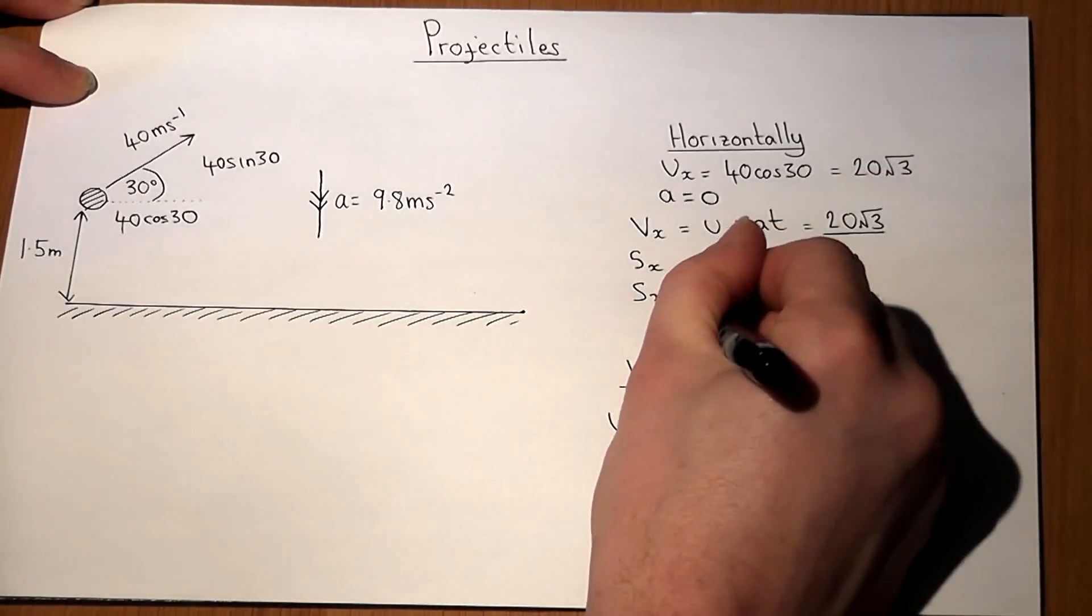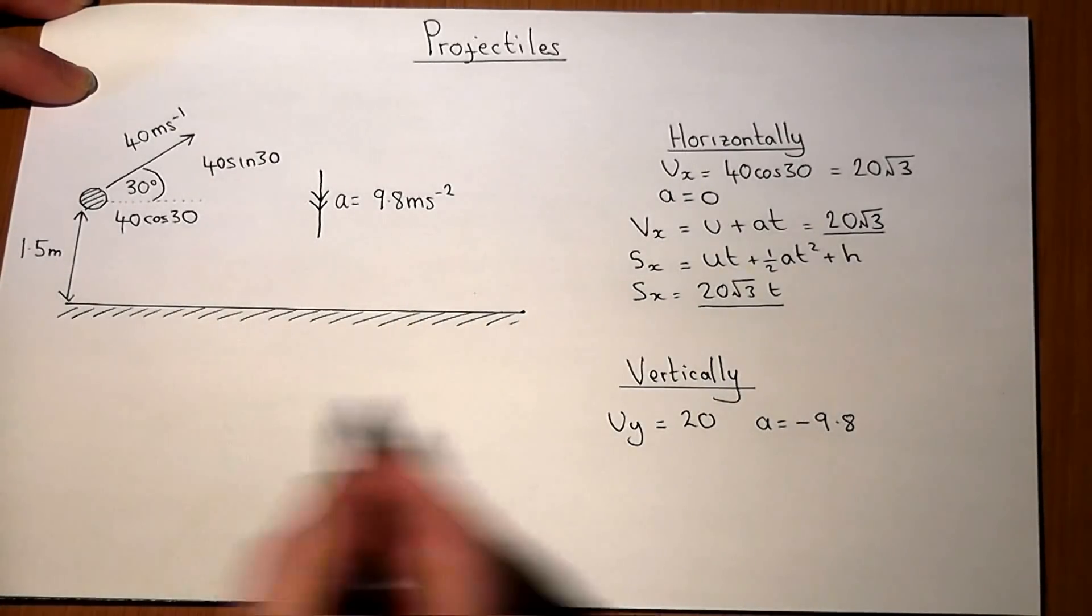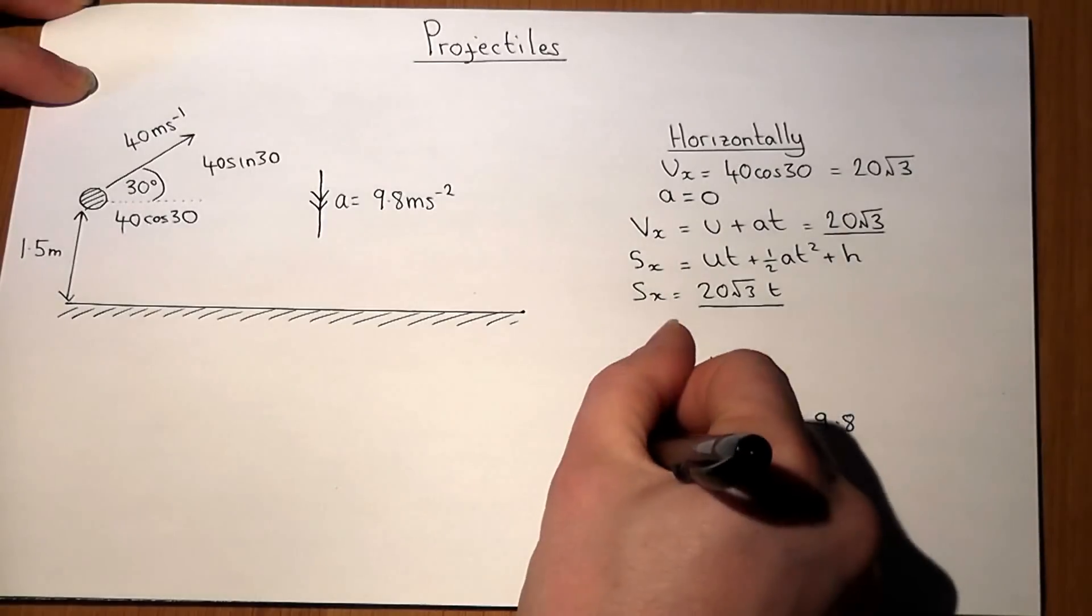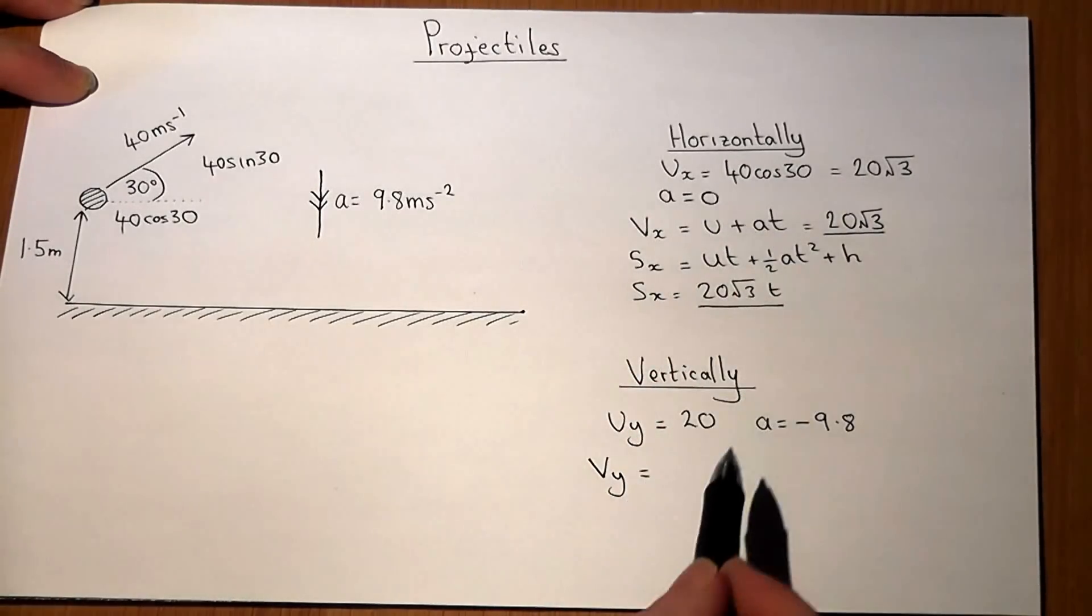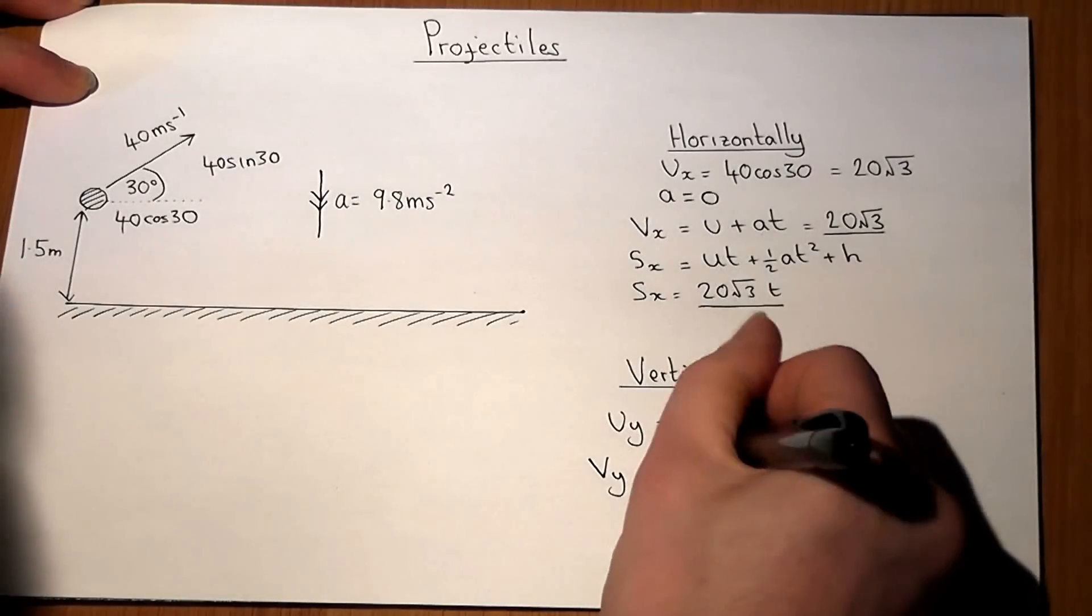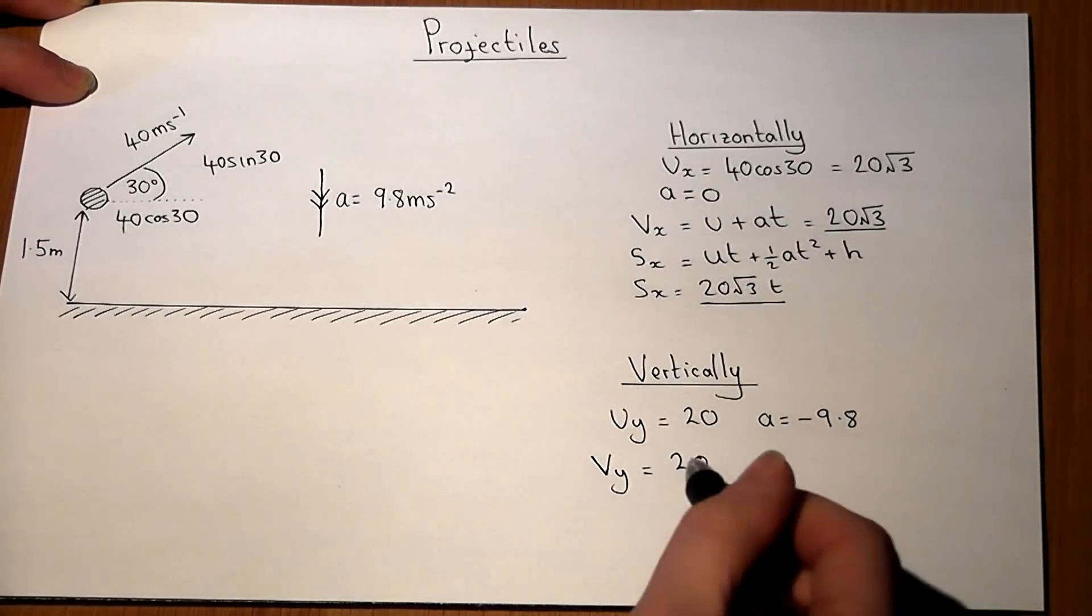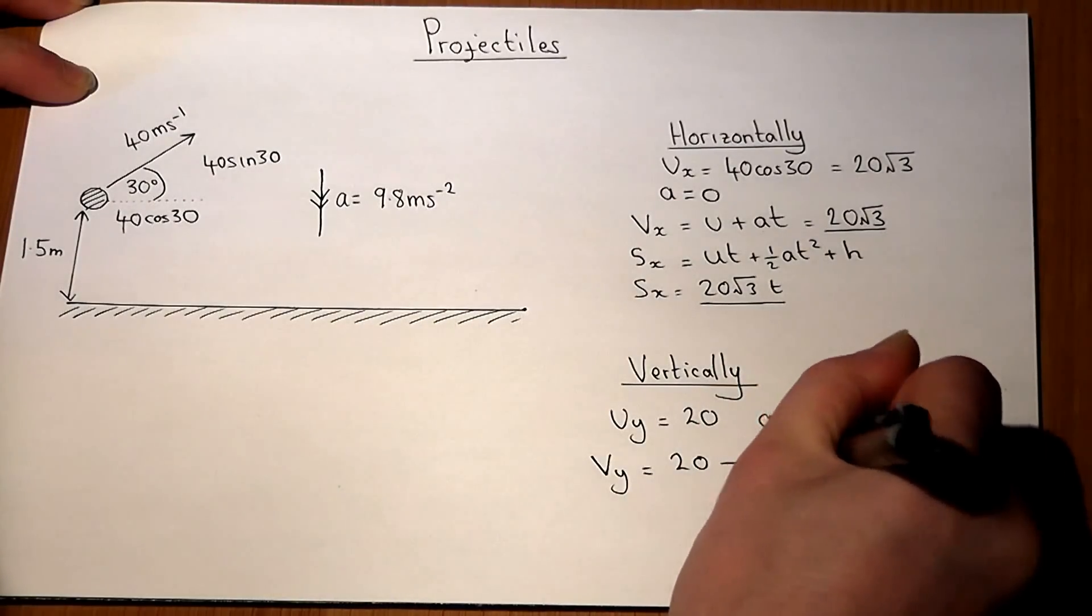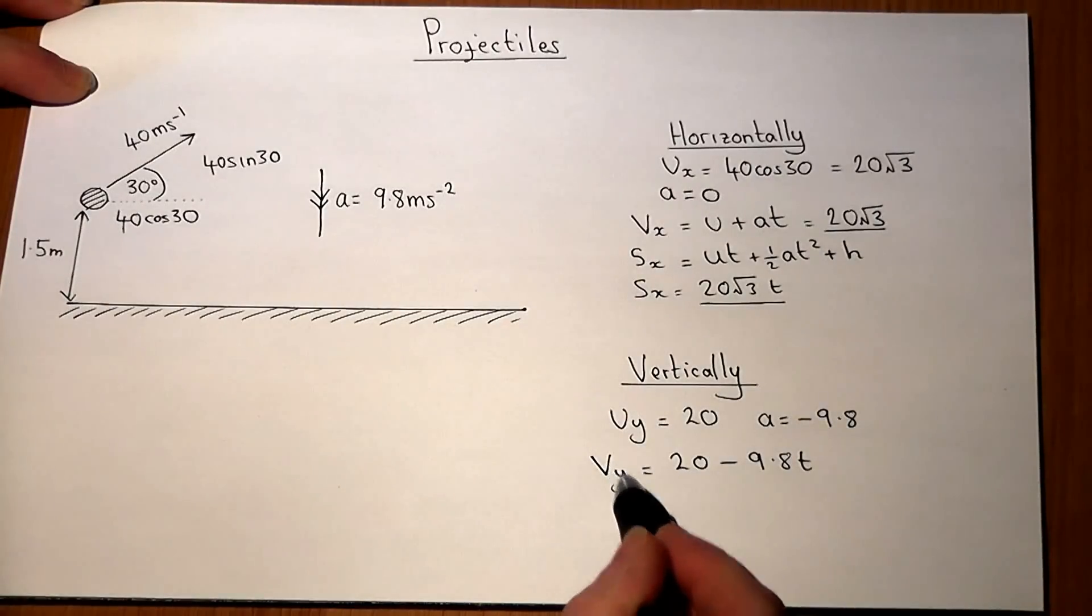Now vertically we use the same rules. So we can find velocity in the y direction, that's still u plus at, but u is now 20, but a is minus 9.8, so it's 20 minus 9.8t, due to acceleration acting downwards. The velocity vertically is always changing.